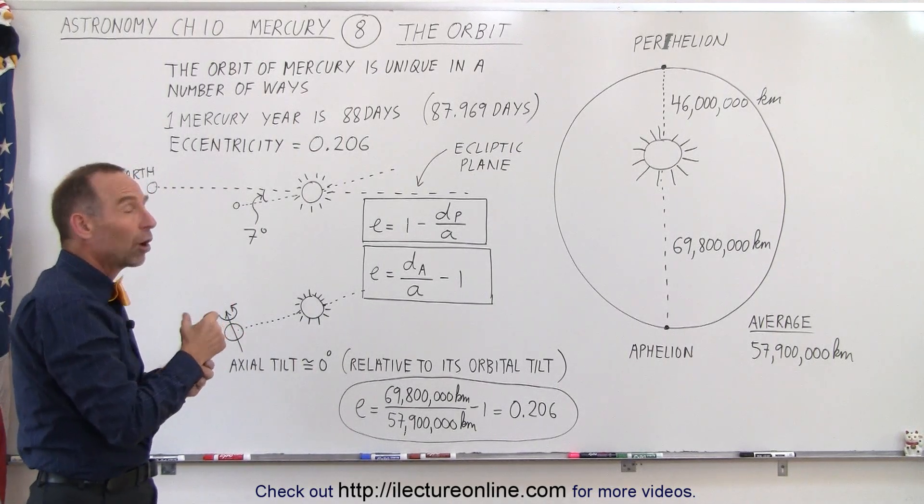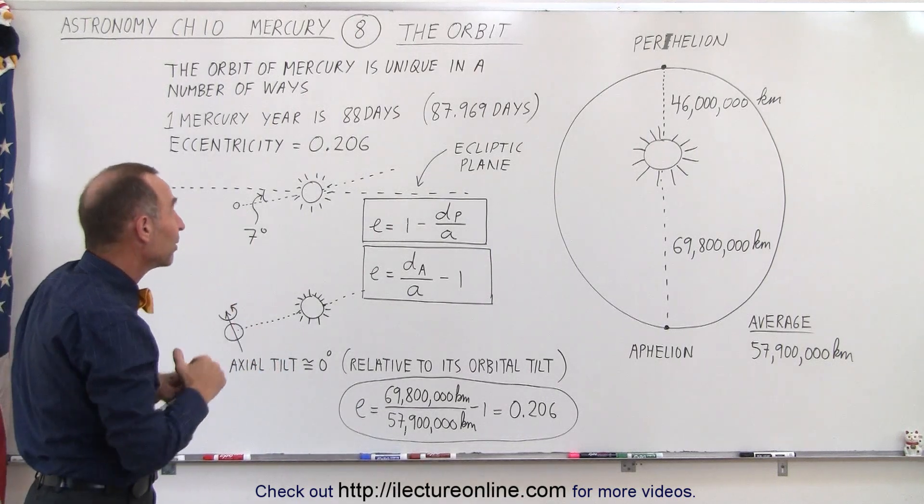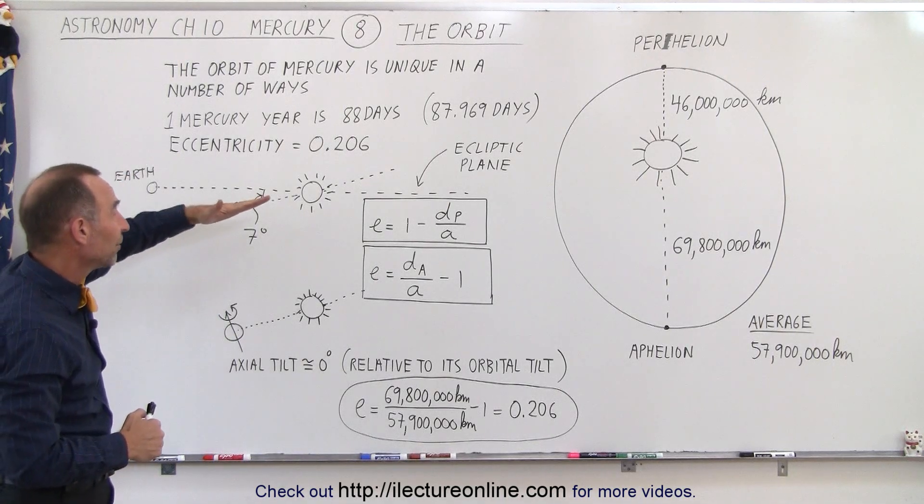Most of the planets are 3 degrees or less. As a matter of fact, all the other planets are either around 3 degrees or less, but Mercury is at an angle of 7 degrees.